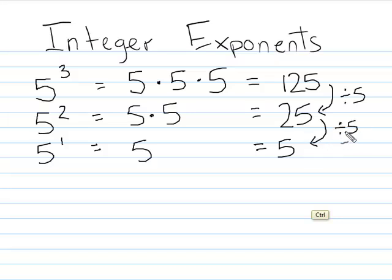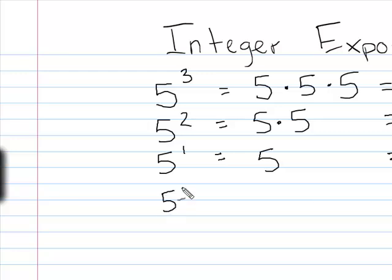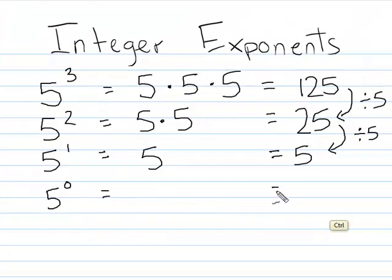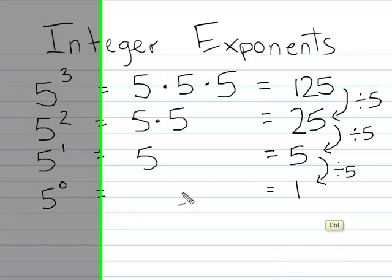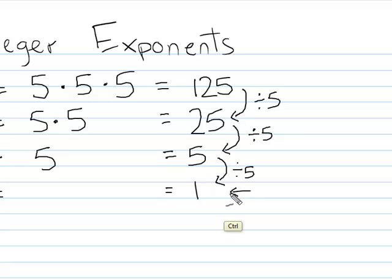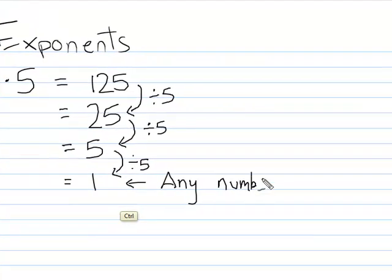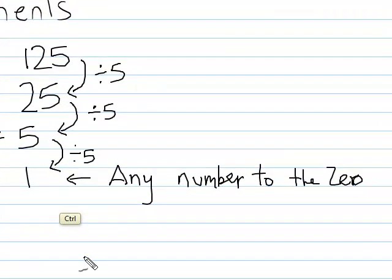Continuing the pattern — three, two, one, now zero. To figure out what five to the zero power is, I'm going to divide by five again, since that's what the pattern is. Five divided by five is one, so five to the zero power is equal to one.